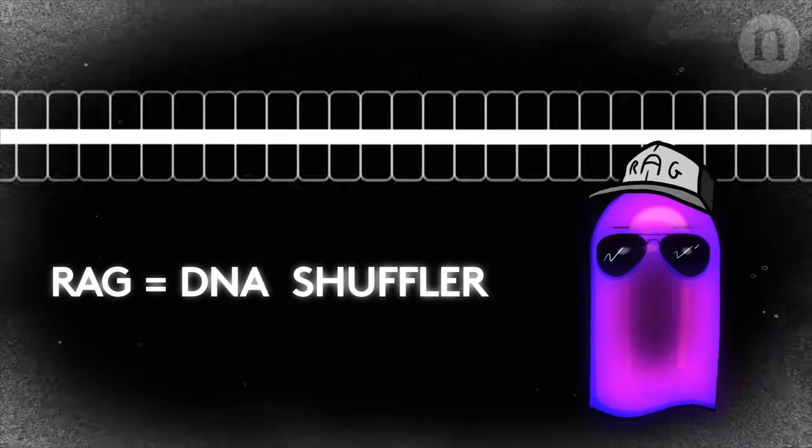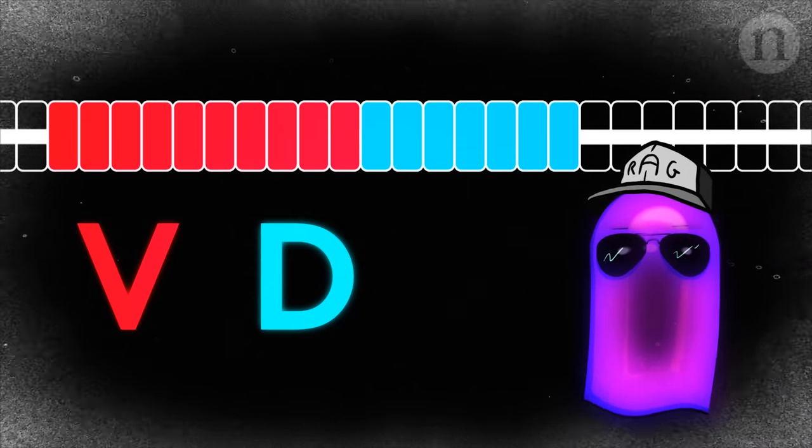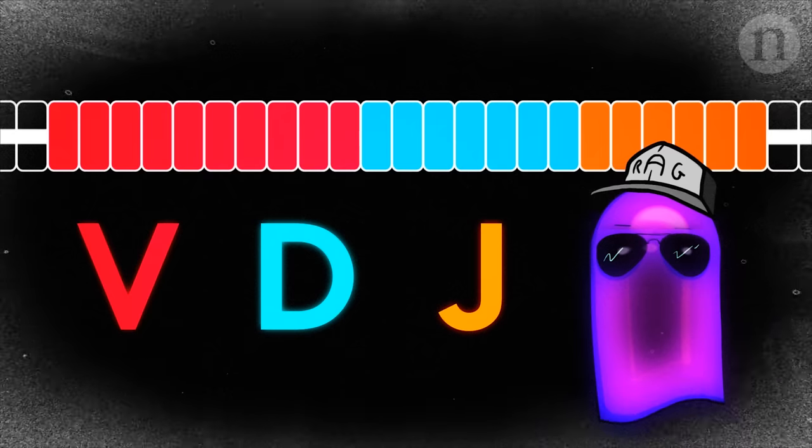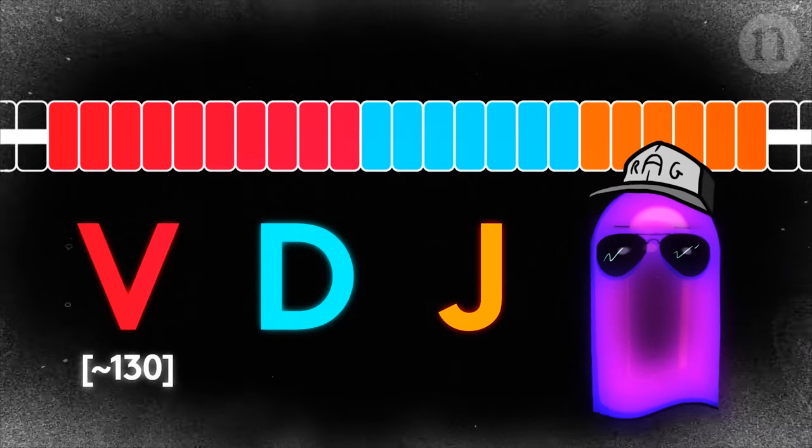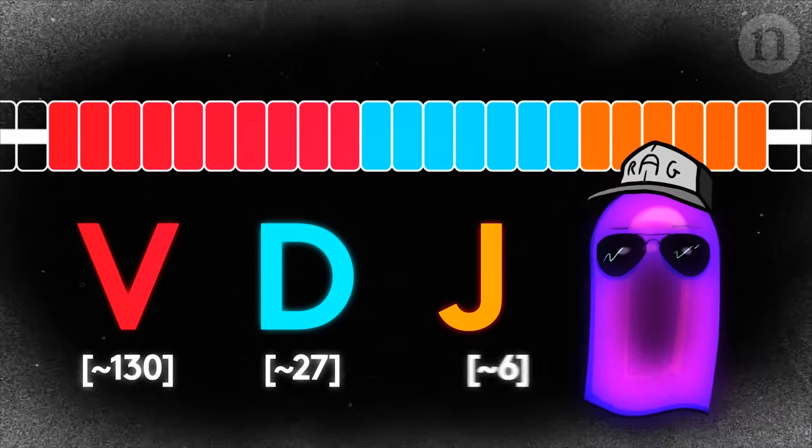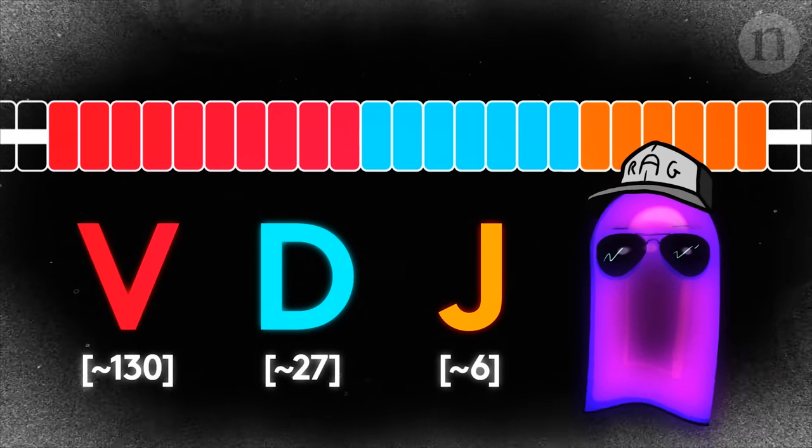There are three kinds of gene segments here, called V, D, and J. For the heavy chain of the antibody, humans usually have around 130 different V-segments, 27 D-segments, and 6 J-segments.